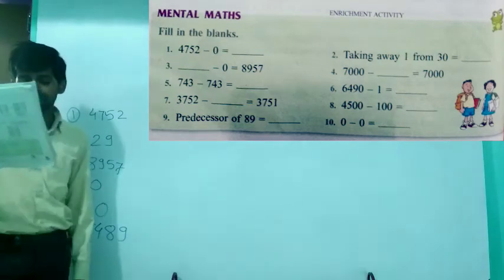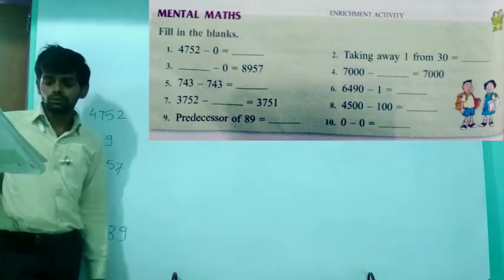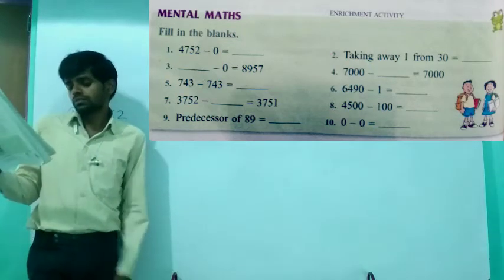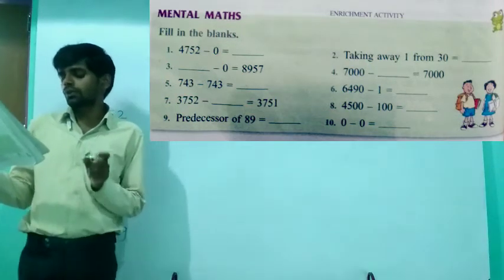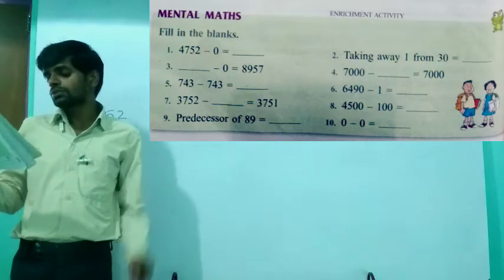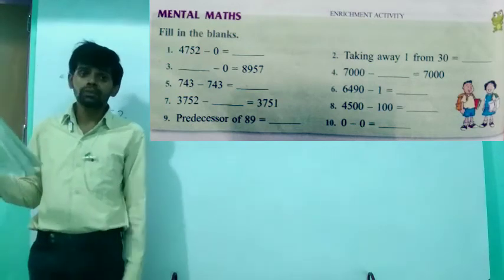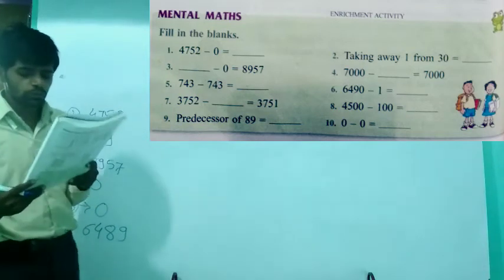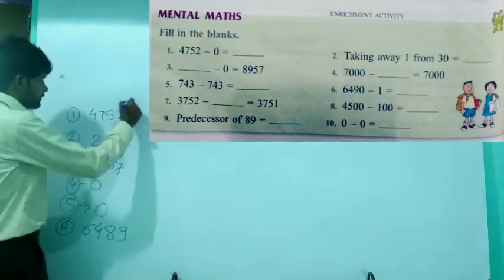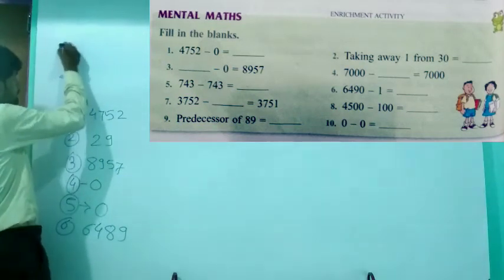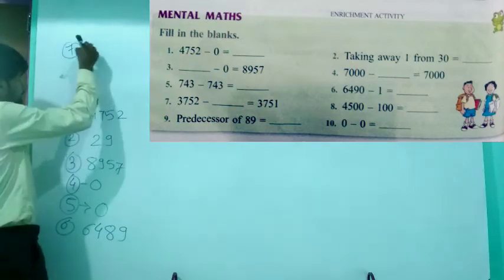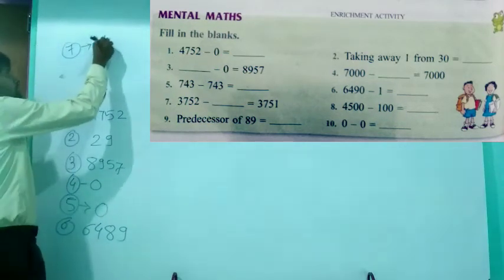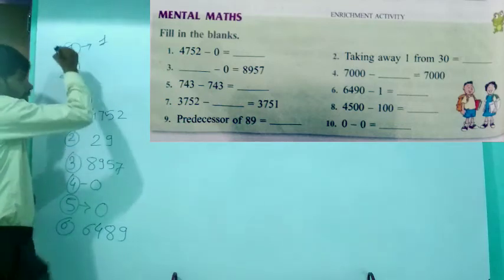Let's see the seventh answer: 3752 minus something equals 3751. Once you subtract 1, you get the predecessor. So the seventh answer is 1.